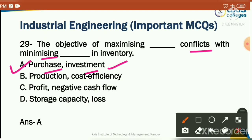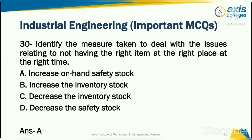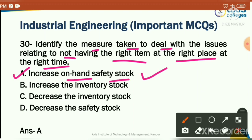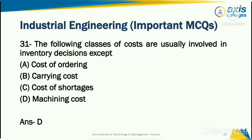MRP requires having the right item at the right place at the right time. To deal with issues where the correct item is not reaching the right location at the right time, what should be done? The correct answer is option A: increase on-hand safety stock — you should increase your on-hand safety stock.